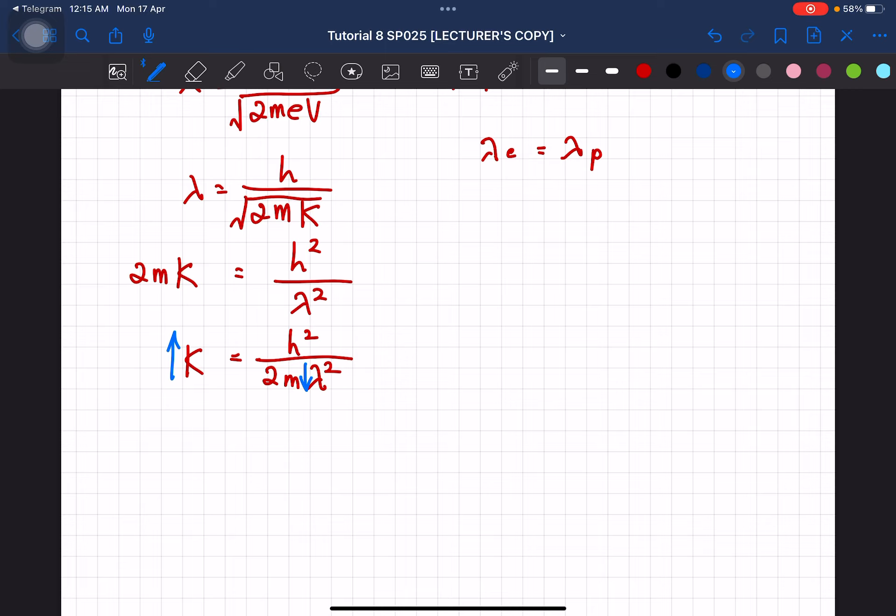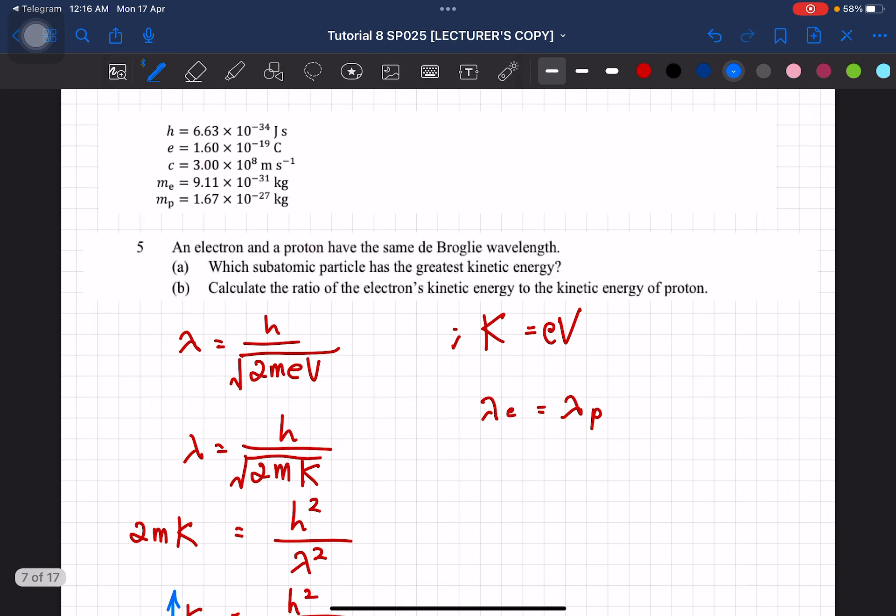Which of, which one? Electron ke proton yang heavier? So we are going to see it that way lah. So we know that the mass of proton is 1.67 times 10 to the power of negative 27 kilogram. Whereas electron is 9.11 times 10 negative 31 kilogram.